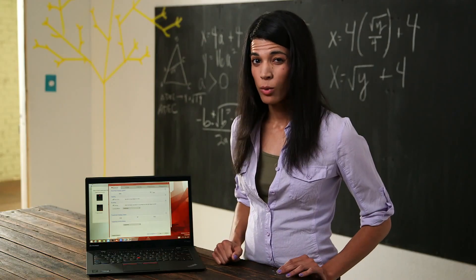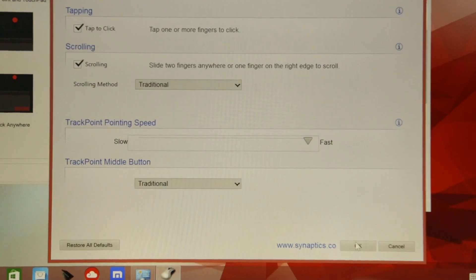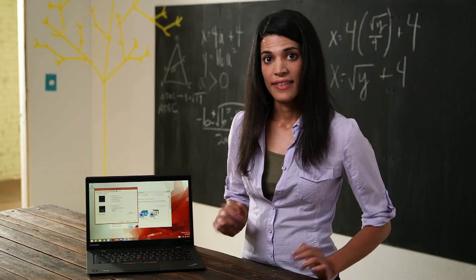Closer to the bottom is a track point speed, increasing that speed as well. Hit OK to solidify these settings. And then that's it.